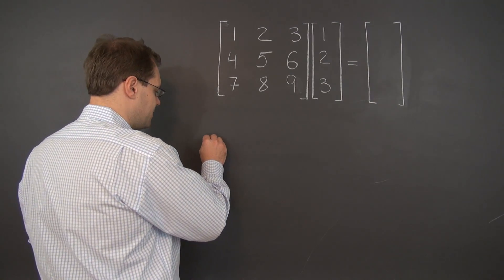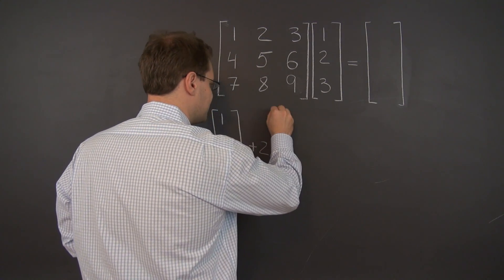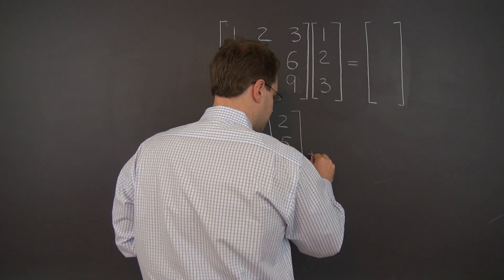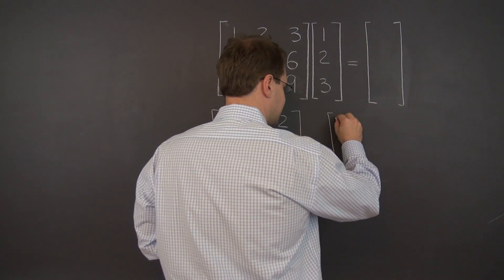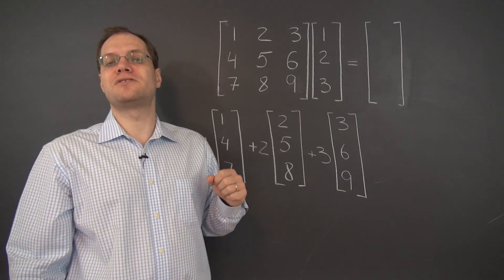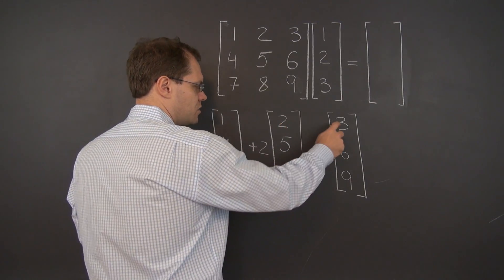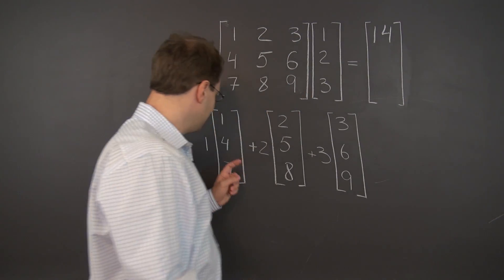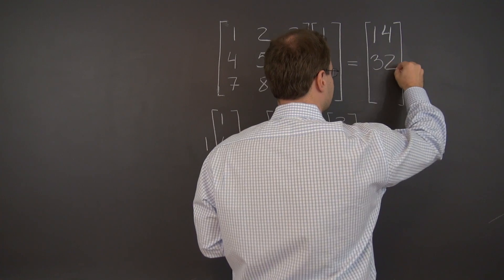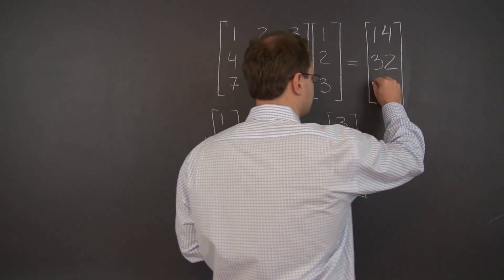Written in expanded form, this is 1 times the first column [1,4,7], plus 2 times the second column [2,5,8], plus 3 times the last column [3,6,9]. Evaluating this linear combination with a running sum: the first entry is 1 + 4 + 9 = 14; the second entry is 4 + 10 + 18 = 32; and the last entry is 7 + 16 + 27 = 50. So the result is the 3x1 matrix [14, 32, 50].